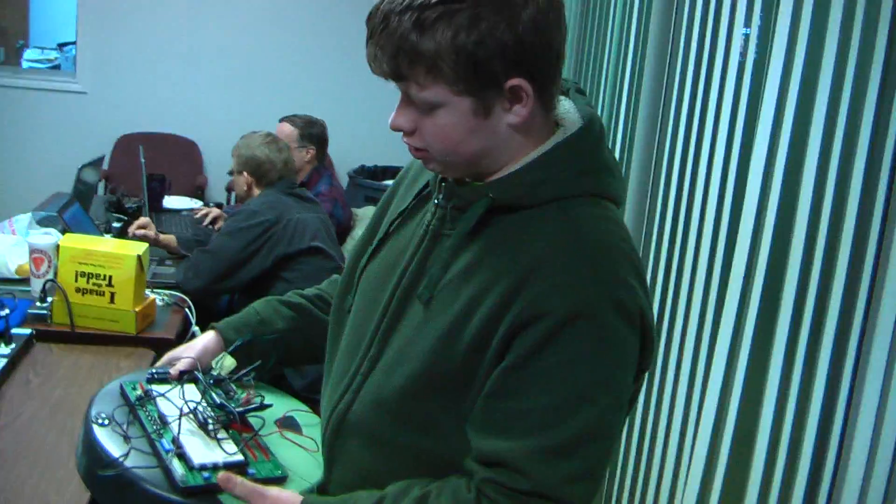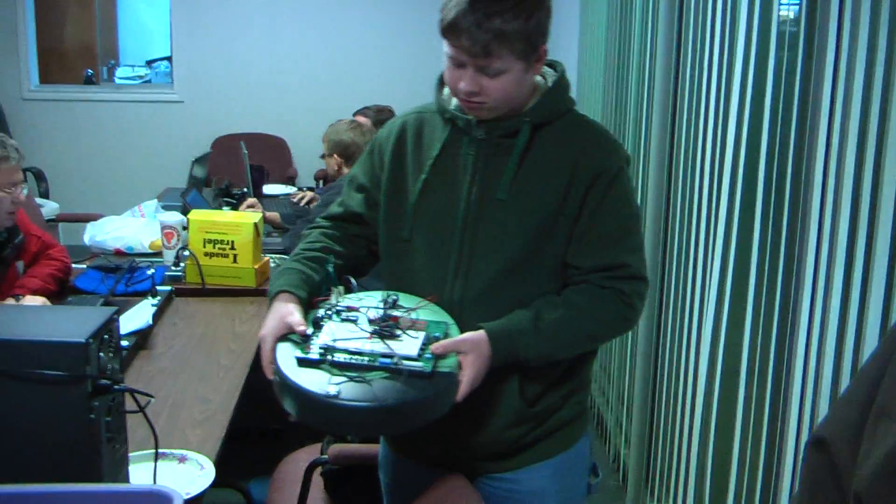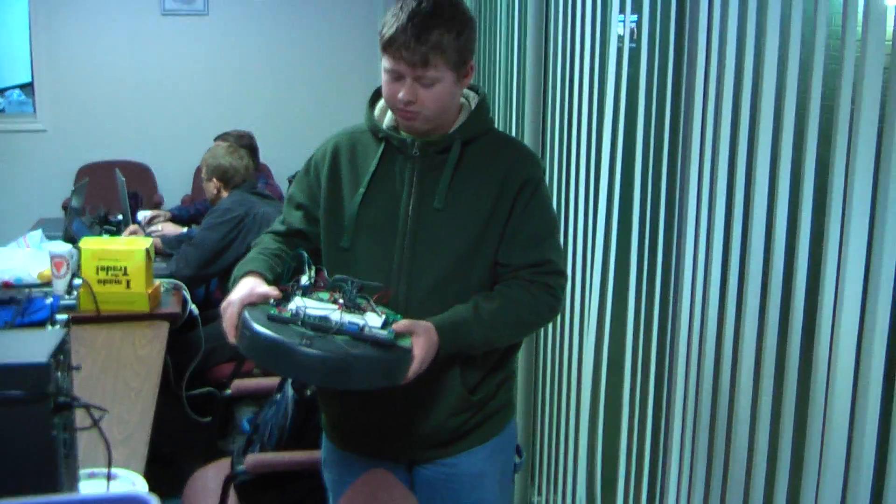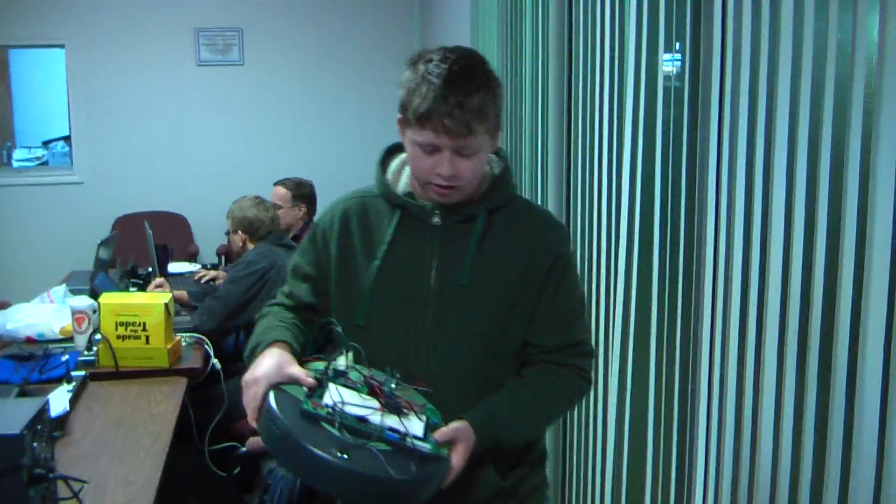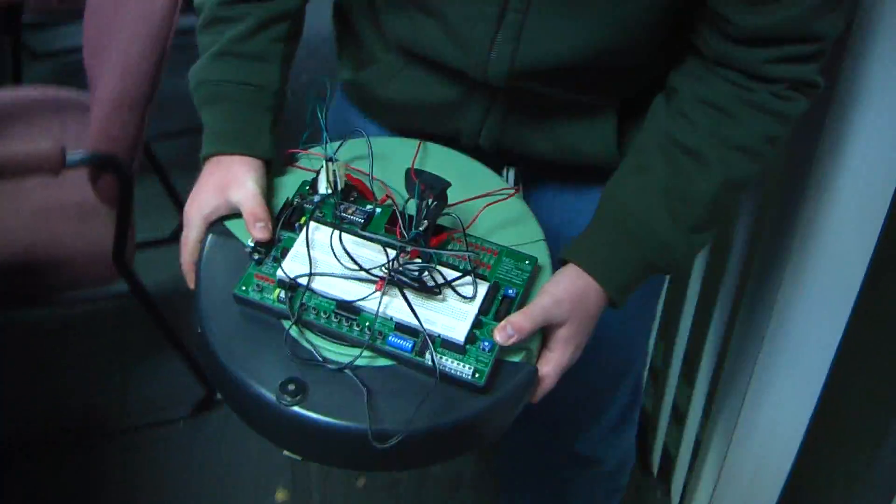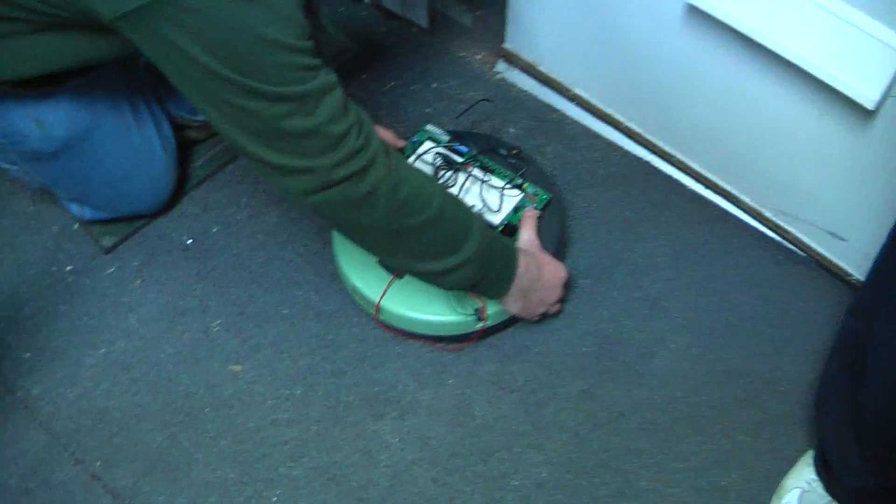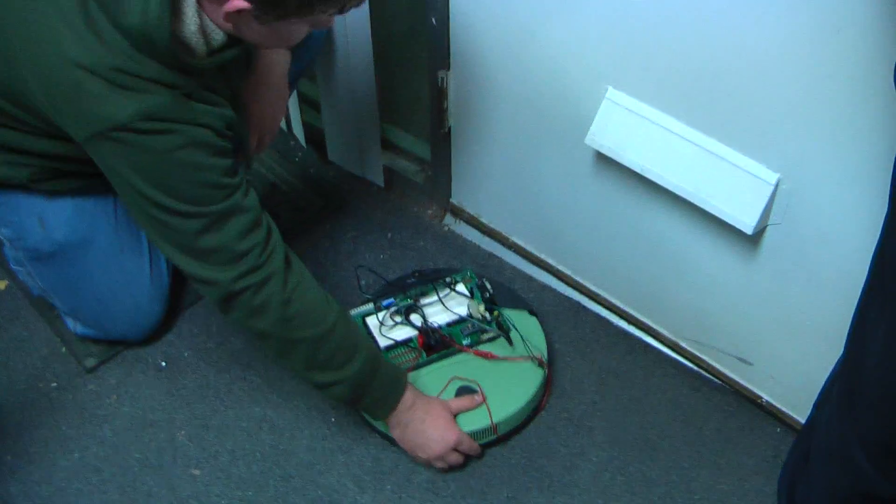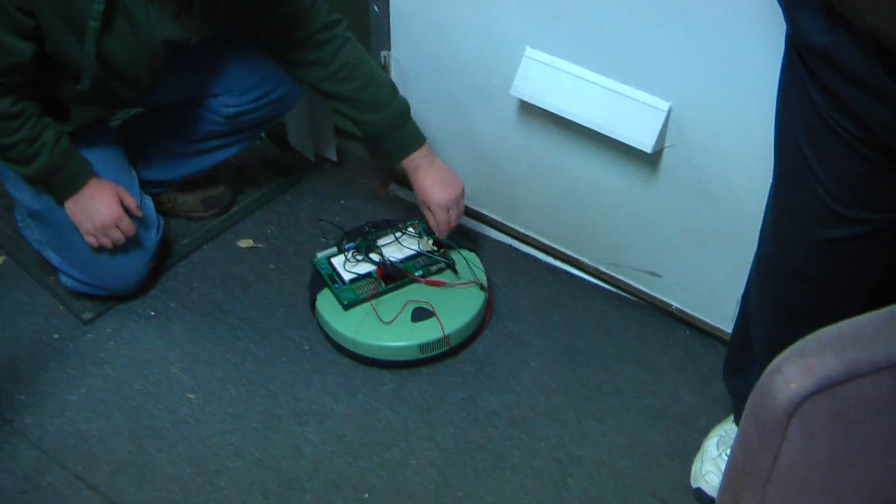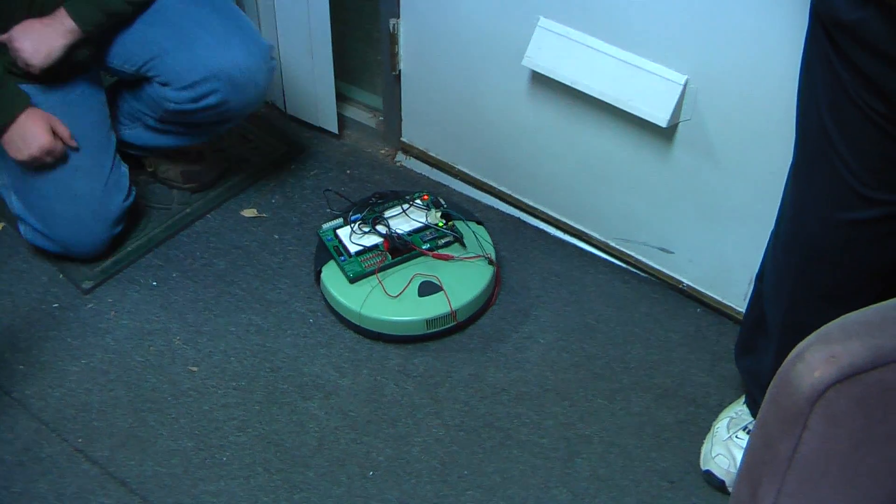This is my new RUBA basic stamp combo that I won in a contest. Hopefully it will follow the wall, but I don't think it will. What's your name? Nathan. That's all right. He's just going to play more for it.